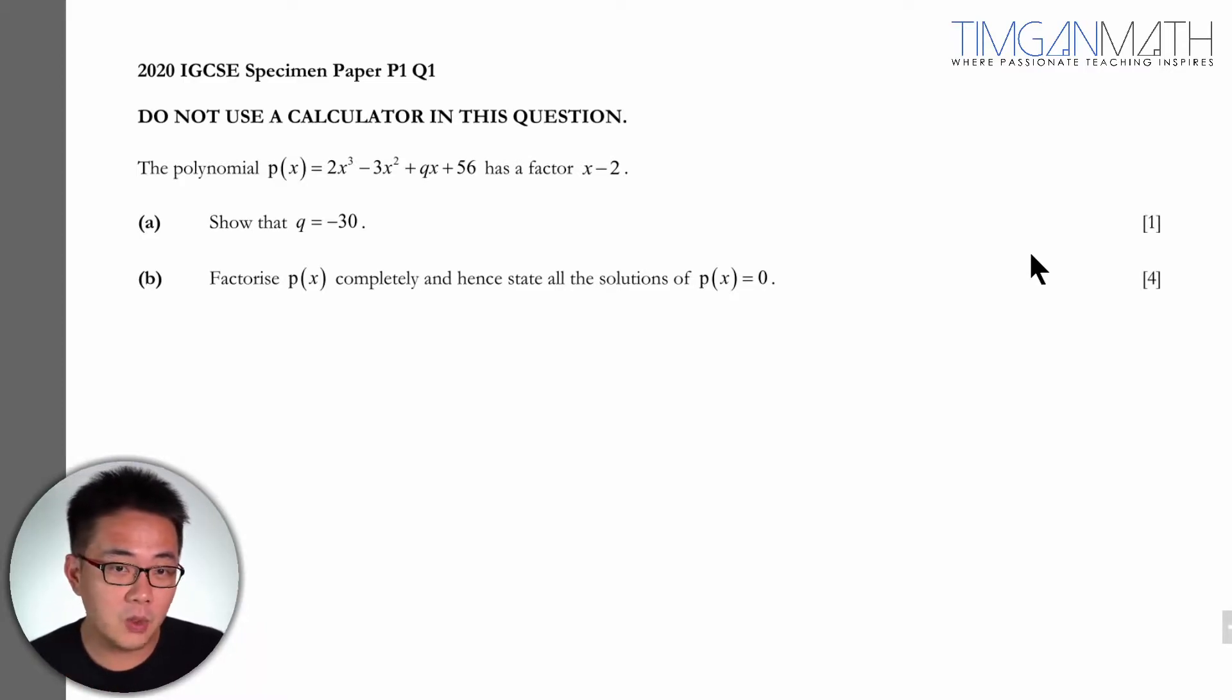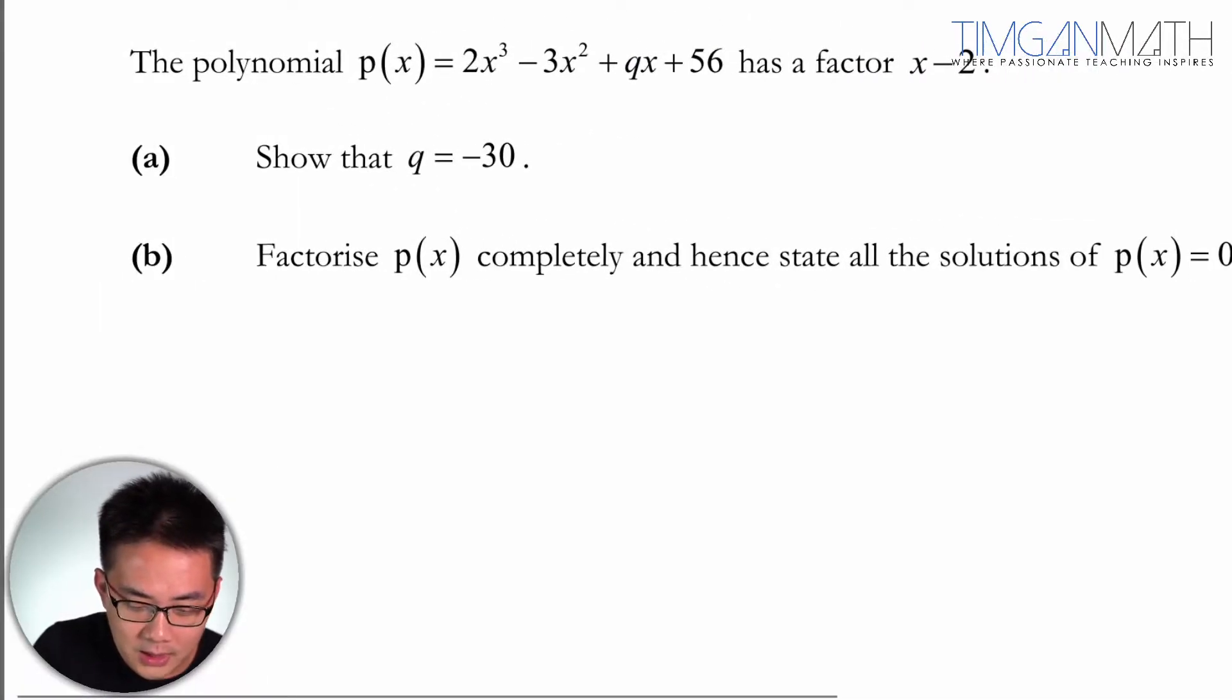So the polynomial P(x) has this factor of x minus 2 and you're told to show that q equals negative 30. I think that's pretty okay. This part here, without using calculator obviously.